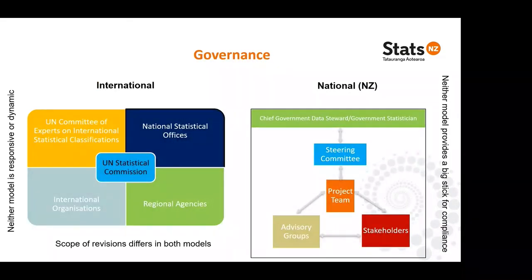In terms of governance, at the international level we have the committee, national stats offices, regional agencies and international organisations — they all sort of work together but also work independently. National stats offices may report to international organisations or regional agencies, and overlaying that is the Statistical Commission as the all-encompassing controller. But there aren't definitive direct links and mandatory requirements to go through the Commission, because international organisations have their own governance models and processes which may run in parallel or at odds with the Statistical Commission processes.